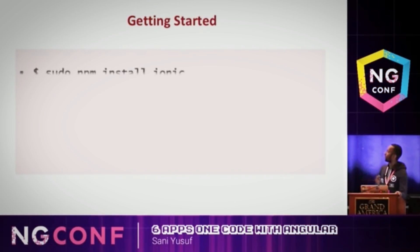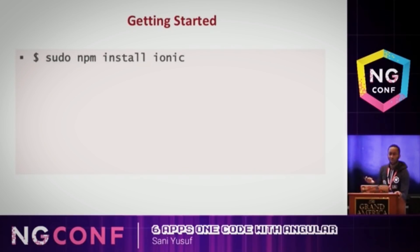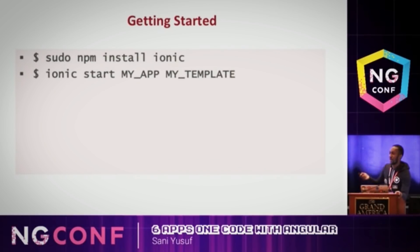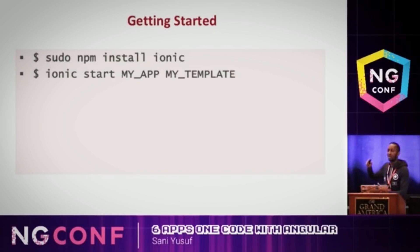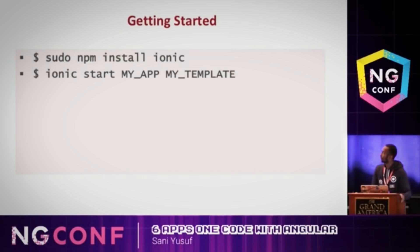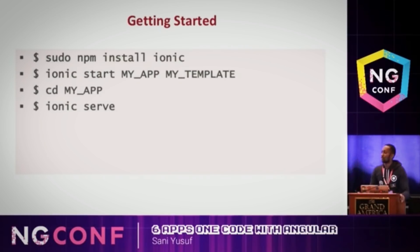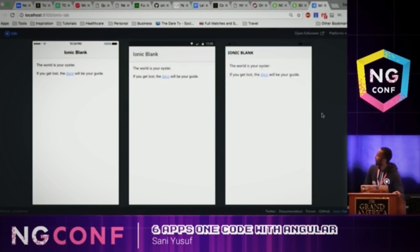To get started, simply run npm install ionic, then ionic start with your app name. They give you a bunch of templates — blank, tabs, Google Maps — or you can pass a GitHub URL and use someone else's template. Then cd into the folder and run ionic serve, and that's it.